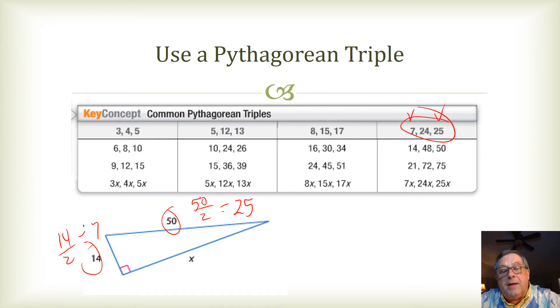So, X must fit into that 24 because it's a right triangle. And I can then just say that 24 times 2 is going to give me the value of X, which is 48.